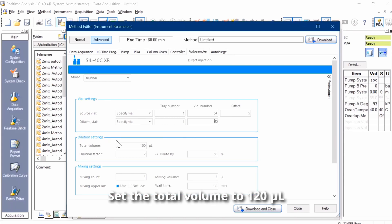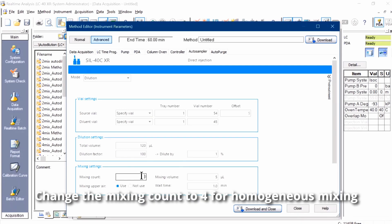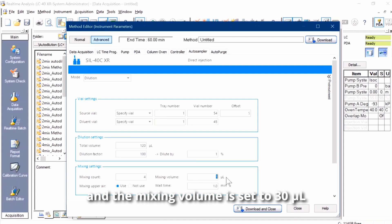Set the total volume to 120 microliters and set the dilution factor. Change the mixing count to 4 for homogeneous mixing, and the mixing volume is set to 30 microliters. Use is selected for mixing upper air, and the wait time is set to 1 minute. Click Download and Close.